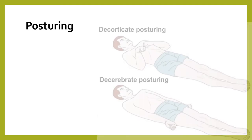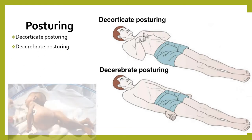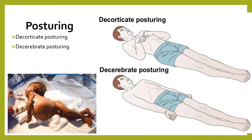On general examination of the CNS, we should also assess posturing. Decorticate posturing involves flexion of arms, wrists, fingers, adduction of arms, and extension of legs with internal rotation and plantar flexion. Decerebrate posturing involves extended, adducted, internally rotated upper extremities with extended legs and plantar flexion. Opisthotonus is arching of the back due to meningeal irritation. Posturing must be documented.